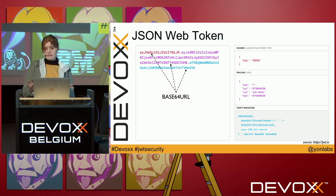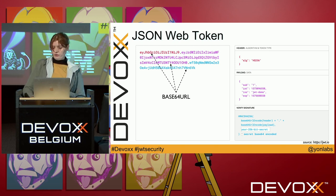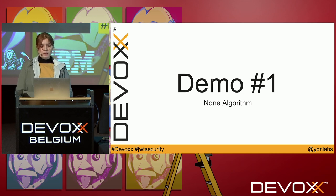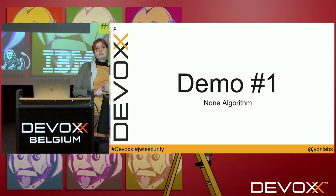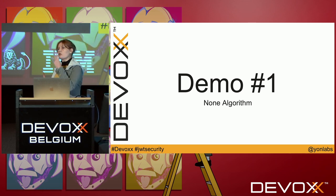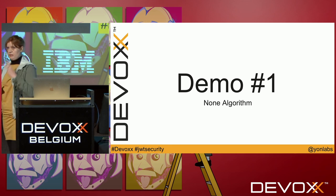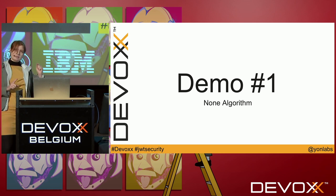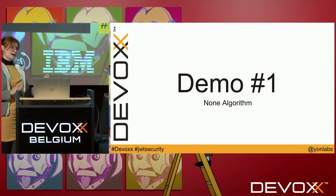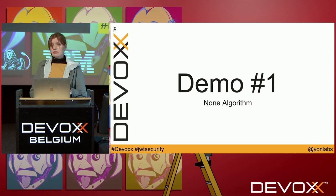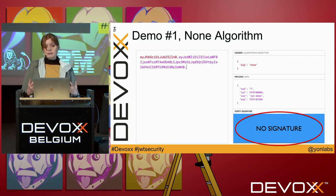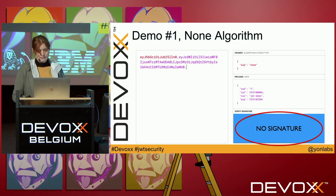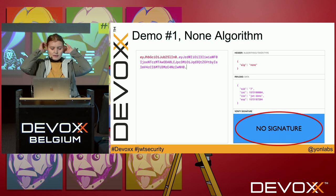So, those are the basics, and now let's move to our first demo. The first demo involves the algorithm 'none'. The spec says that two algorithms must be implemented by a library: one is 'none', and the other is HS256. And what does 'none' mean? It means that the token is not signed at all. So how can we exploit it?